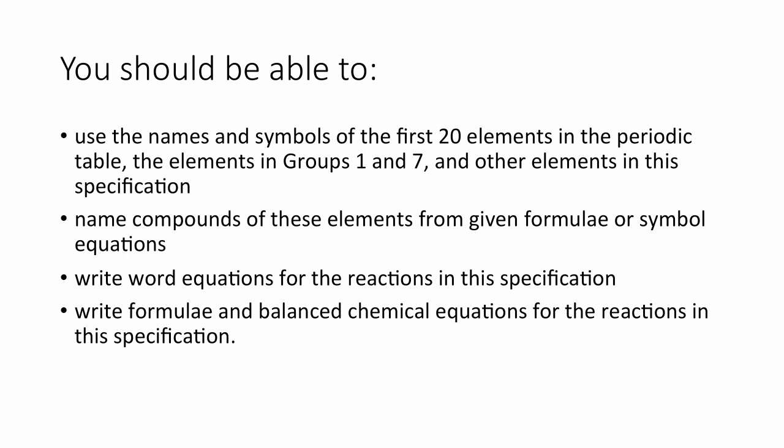Quick check: you should be able to use the names and symbols of the first 20 elements in the periodic table, including the elements in groups 1 and 7 and some other elements defined by the specification. You should be able to name compounds of these elements from a given formula or symbol equations, and write word or balanced chemical equations for their reactions.